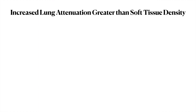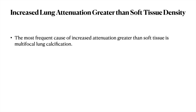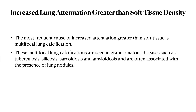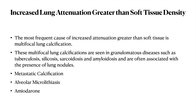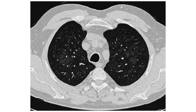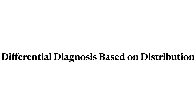The third category is increased lung attenuation greater than soft tissue density. The most frequent cause is multifocal lung calcification, which can result from granulomatous diseases like tuberculosis, silicosis, sarcoidosis, and amyloidosis. Apart from that, metastatic calcification, alveolar microlithiasis, and amiodarone deposition can all produce increased attenuation. Here you can see the pattern of diffuse haziness due to malignant calcifications, with increased attenuation typical of calcification.